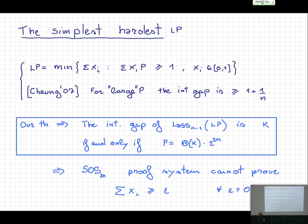From the proof perspective using the Sum-of-Squares proof system, it means that the Sum-of-Squares proof system is not able to prove something stronger than this inequality — whereas what must be proved is that the summation is greater or equal to one. This is the simplest case.